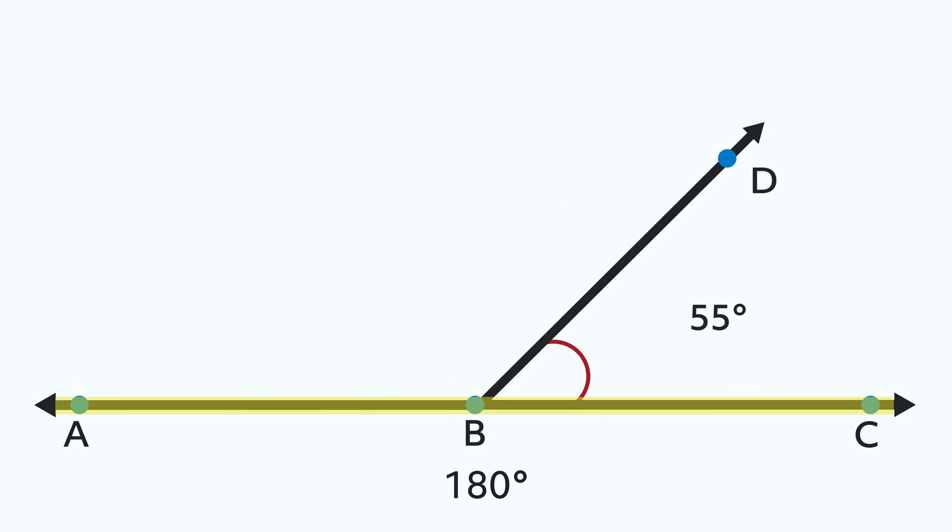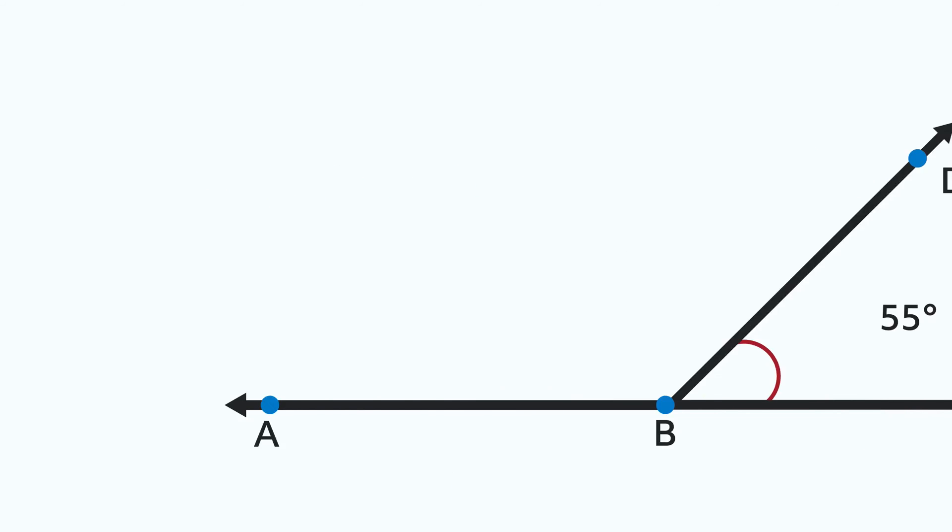By taking the whole straight angle, ABC, that measures 180 degrees, and subtracting the smaller angle, DBC, that measures 55 degrees. 180 degrees minus 55 degrees equals 125 degrees. This is called a linear pair.